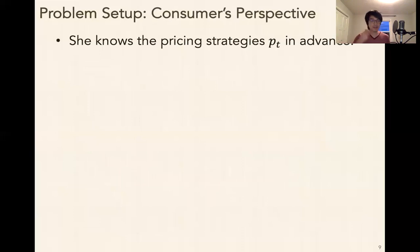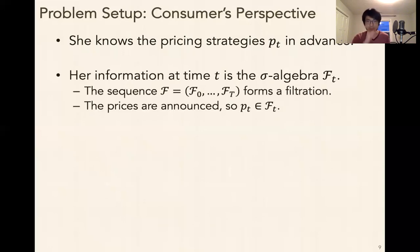From the consumer's perspective, the seller has credibly pre-committed to these pricing strategies P of T. So she knows this in advance. Her information at time T is just a sigma algebra F of T, no superscript S anymore. The sequence forms a filtration because her information state is growing. And also, the prices are announced to her at time T. So P of T is going to be measurable with respect to F of T.